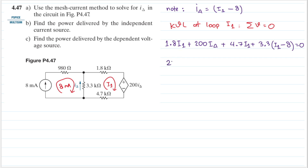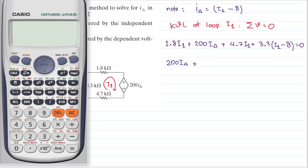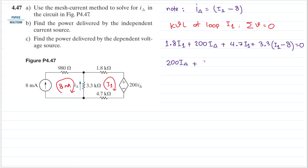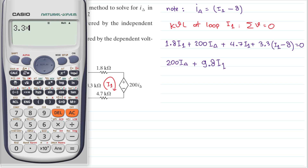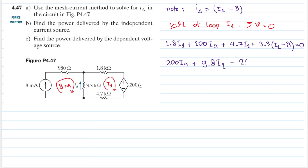Let's simplify. We write 200 i_delta first, then plus 1.8 plus 4.7 plus 3.3 for i1. Using a calculator: 1.8 plus 4.7 plus 3.3 equals 9.8, so we have 9.8 i1. Then 3.3 multiplied by 8 equals 26.4, giving us minus 26.4. So the equation is: 200 i_delta plus 9.8 i1 minus 26.4 equals zero.